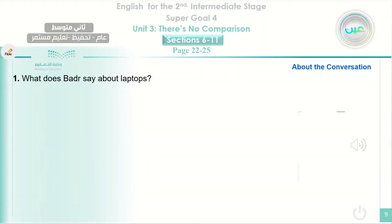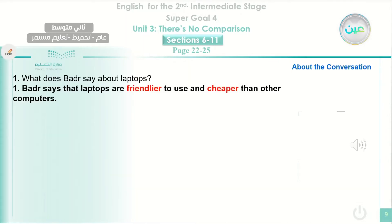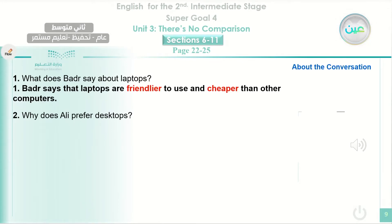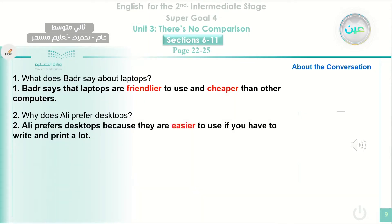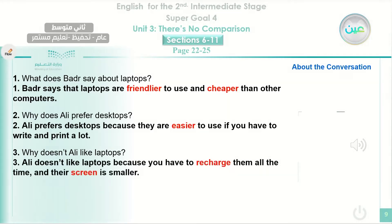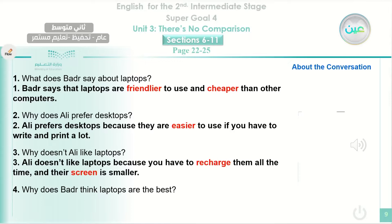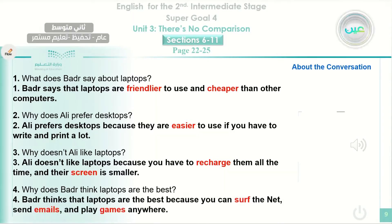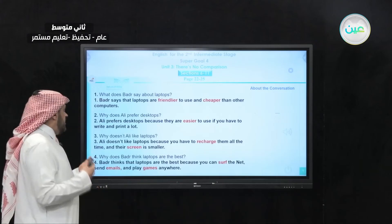Now let's answer the questions. What does Badr say about laptops? Badr says it is friendlier and cheaper. Why does Ali prefer desktops? He thinks it is easier to use and to print. Why doesn't Ali like laptops? He thinks it needs to be recharged so many times and the screen is smaller. Why does Badr think laptops are the best? He thinks he can surf the internet, send email, and play games anywhere.